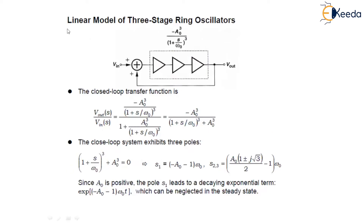Now let us analyze the linear model of the three-stage ring oscillator. As shown in the figure, three stages are used and the open-loop gain is given by minus a₀ cubed upon (1 + s/ω₀)³. The closed-loop transfer function V_out(s)/V_in(s) equals [−a₀³ / (1 + s/ω₀)³] divided by [1 + a₀³ / (1 + s/ω₀)³], which simplifies to H(s) / (1 + H(s)). This yields minus a₀³ upon [(1 + s/ω₀)³ + a₀³].